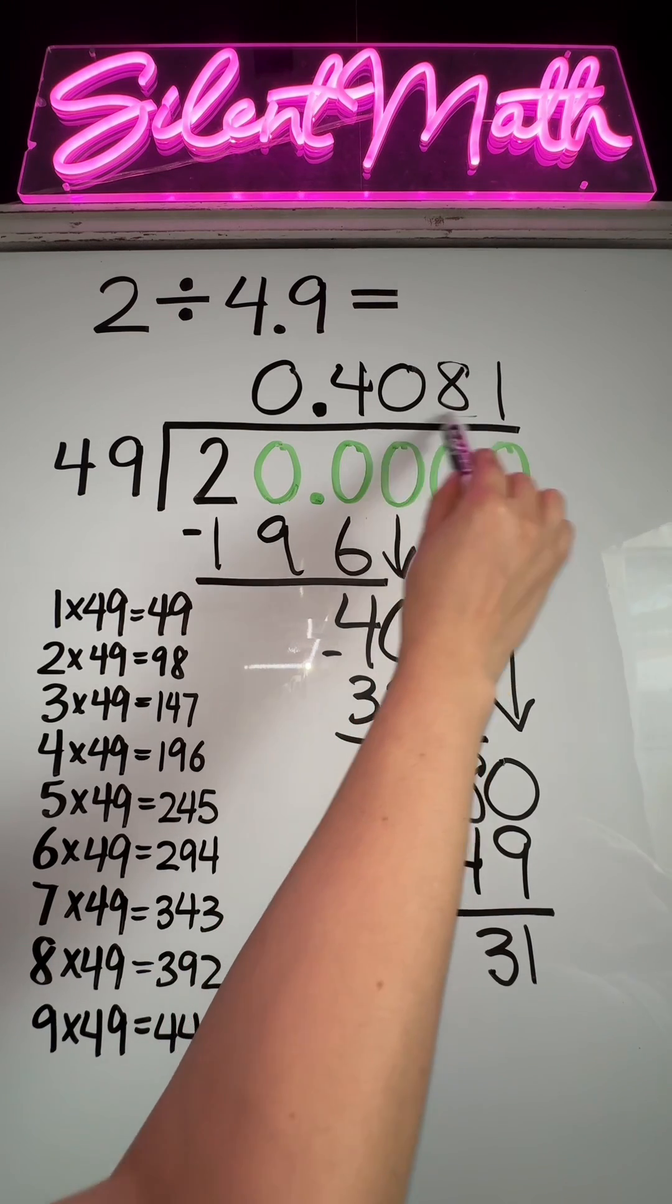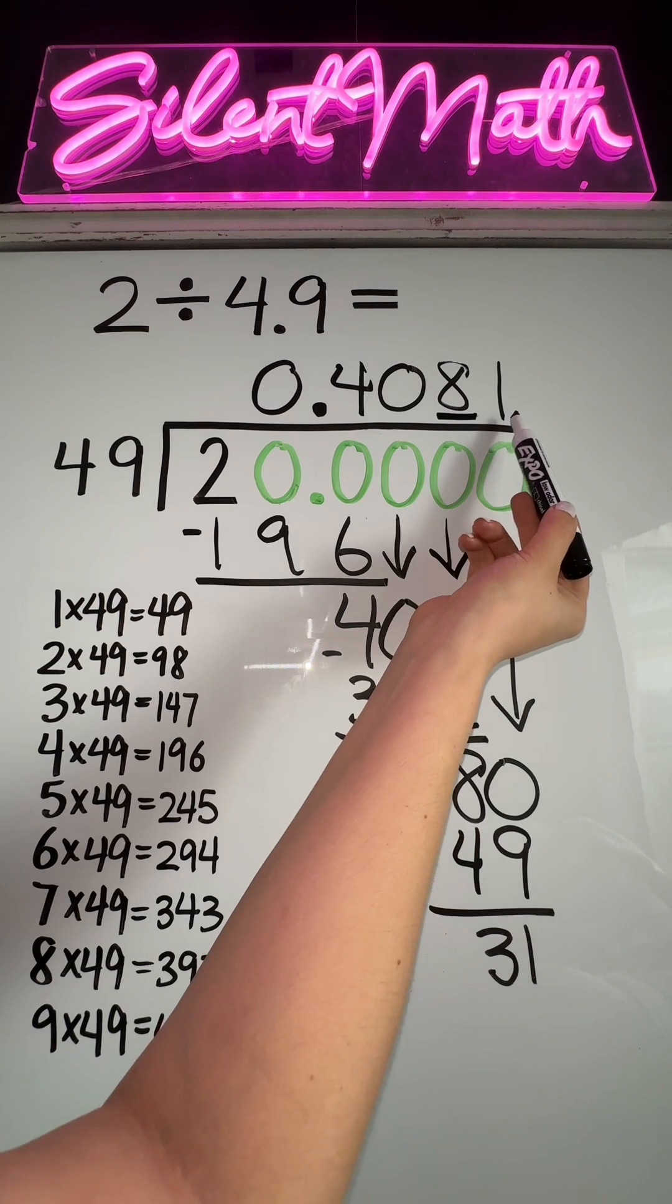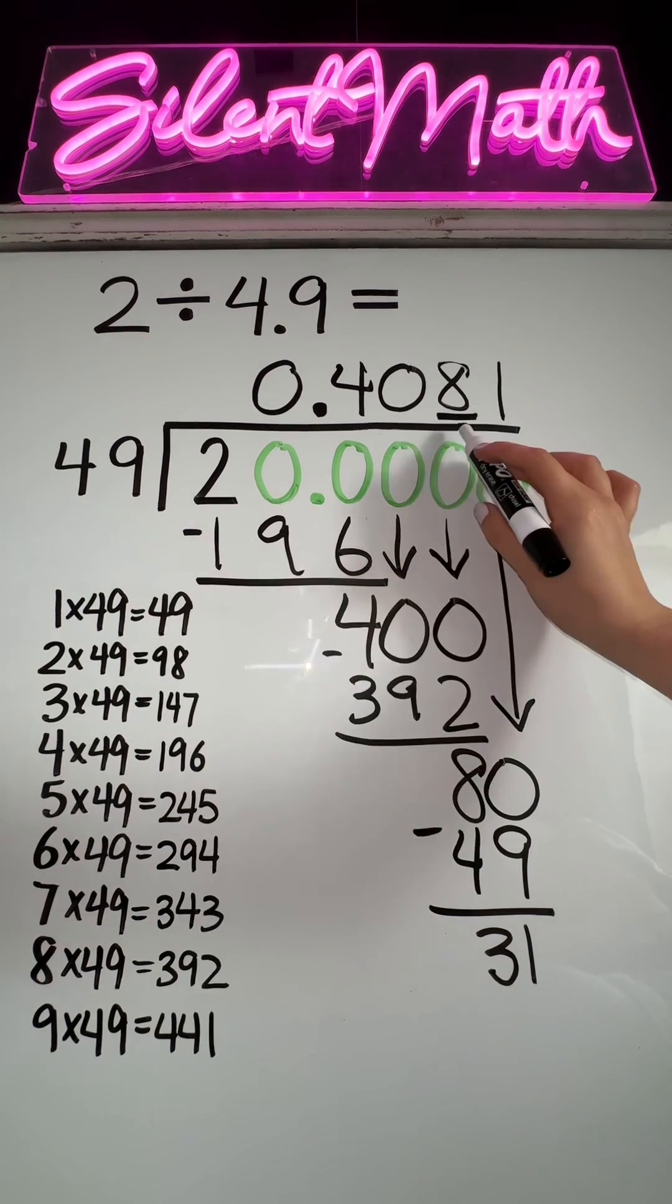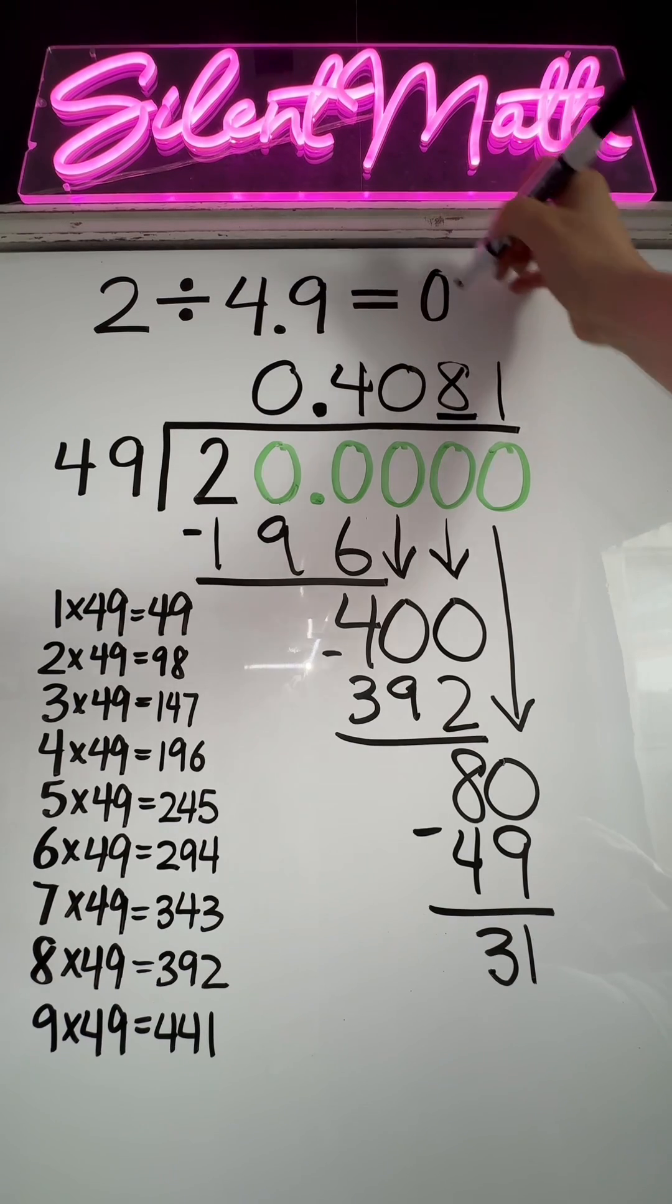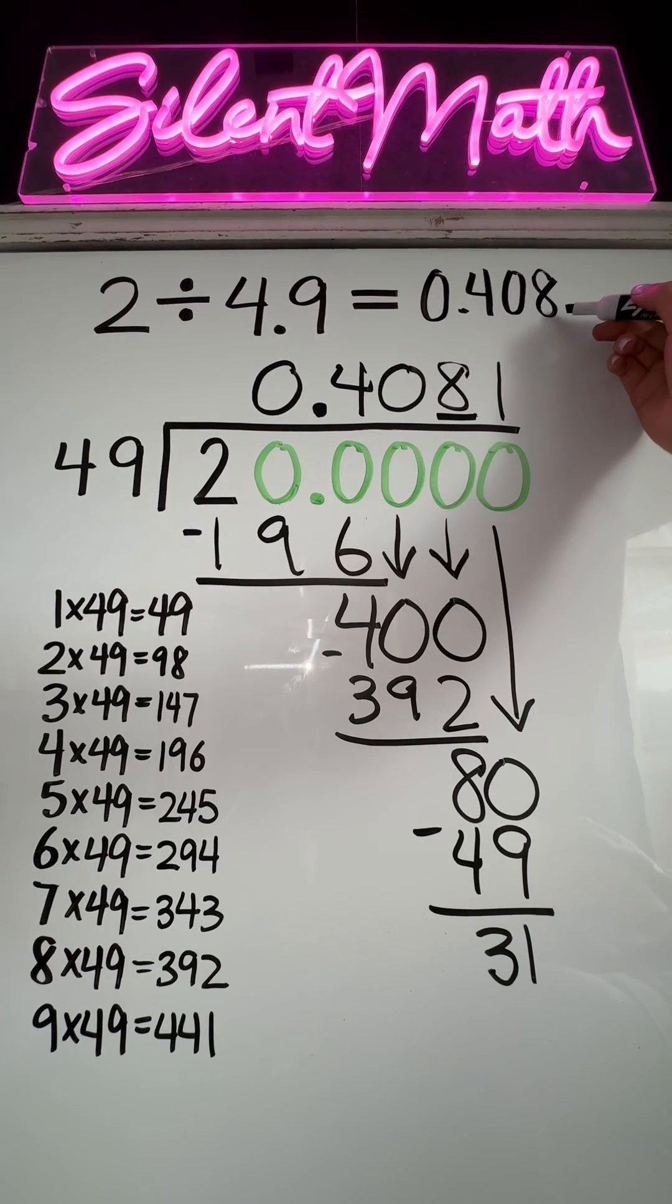I want to round to this place value. So you're going to look at the neighbor. If your neighbor is four or under, you're going to keep this the same, and that is the case. So we're going to say this quotient is about 0.408 or 408 thousandths. Let me know if you have any other questions.